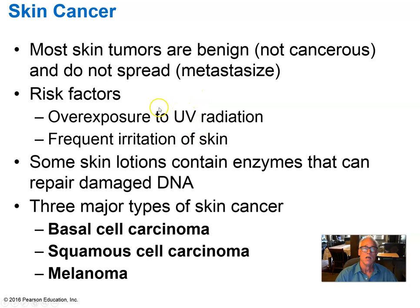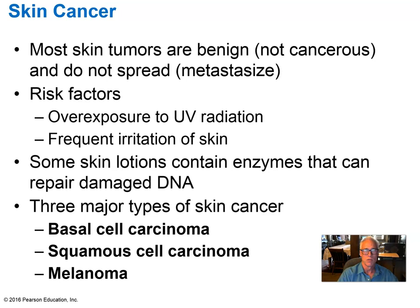UV radiation has enough energy to chemically modify the DNA in the cells of the epidermis. If the right combination of mutations occurs by the random action of UV light, we may have transformation of normal dividing keratinocytes in the basal or spinous layer into tumor cells — cells that grow unchecked without the requirement for a normal signal to grow. Tumor cells generally do not perform any of the normal functions of the cell type from which they arose. That's what we call cancer.